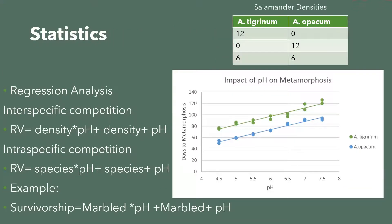For statistics, I will be doing a regression analysis. To measure interspecific competition, the response variable equals the interaction between density and pH plus the main effects of density and pH. For intraspecific competition, the response variable equals the interaction between species and pH plus the main effects of species and pH. For example: survivorship equals marbled salamanders × pH plus marbled salamanders plus pH.